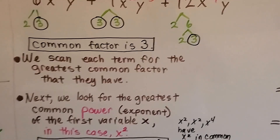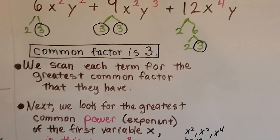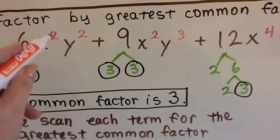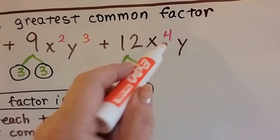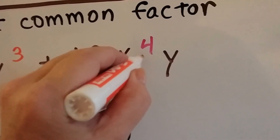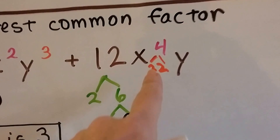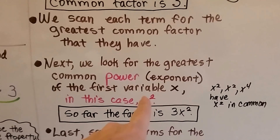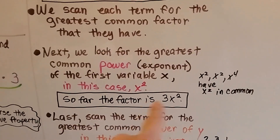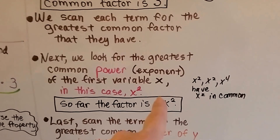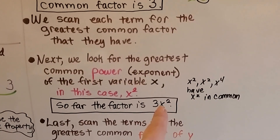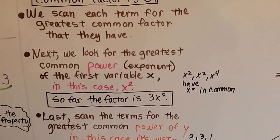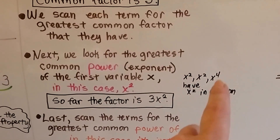Next, we look for the greatest common power of the first variable x. In this case, it's going to be x squared. Because we've got x to the second power, x to the second power, and x to the fourth power. If we made a tree for this, it would be 2 times 2. So what they've got in common is a 2, and we're going to use x squared as the factor for the x. That means we've got 3 and x squared together. x squared, x squared, and x to the fourth have x squared in common, because we can multiply x squared times x squared to get x to the fourth.